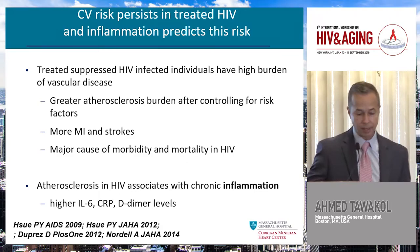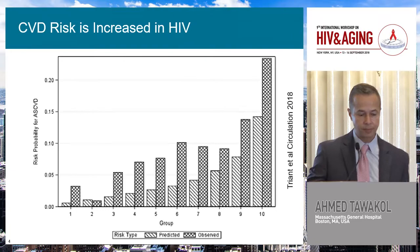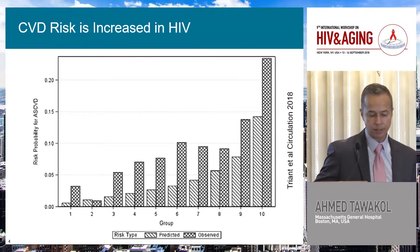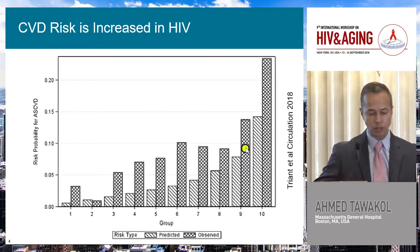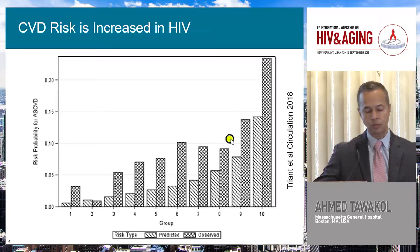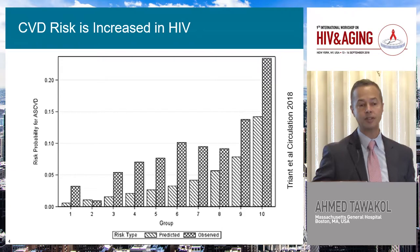Importantly, inflammation appears to be causal. Here's a recent study currently in press showing that if you look across deciles of calculated ASCVD risk — which most primary care physicians will plug into the calculator — you can see the graded increased risk in the gray bars for patients not living with HIV. The observed risk of individuals with HIV shows a substantial increase above and beyond what would be predicted by their cardiovascular disease risk factors.